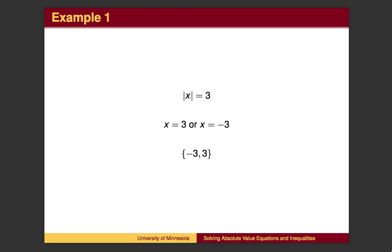When solving equations, we are given two possibilities for the absolute value. In this case, perhaps x is positive 3, or perhaps we remove the negative sign from negative 3. In set notation, the solution is the two numbers negative 3 and 3.